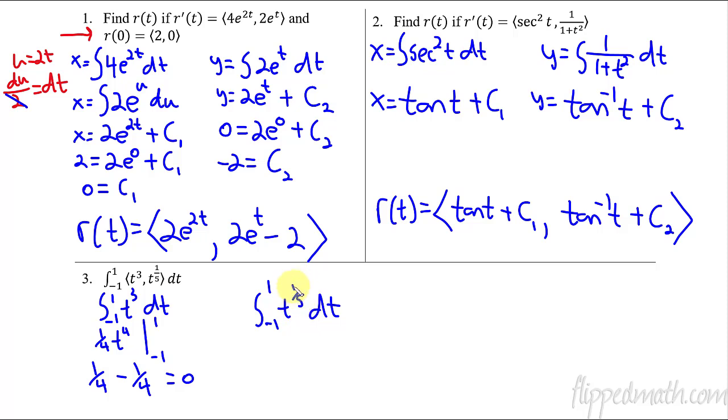This one. So we add 1. That becomes t to the 6 fifths. And then divide by 6 fifths, which means we're going to multiply by 5 sixths. And evaluating that from negative 1 to 1. So plug in the 1. We get that 1 raised to that power is still just 5 sixths. So 5 sixths minus. Now plug in the negative 1. So the question is, is this going to be negative or positive? Well, the fifth root makes it negative 1. But when you raise it to the sixth power, negative 1 to the sixth power is positive. So this is positive 5 sixths. So we're subtracting positive 5 sixths, which also equals 0.